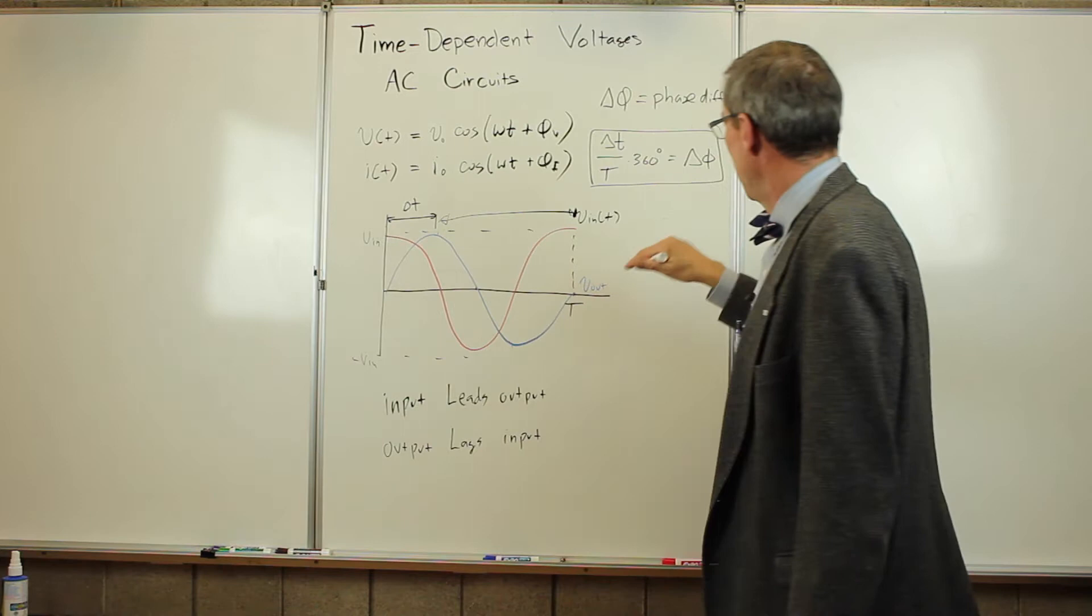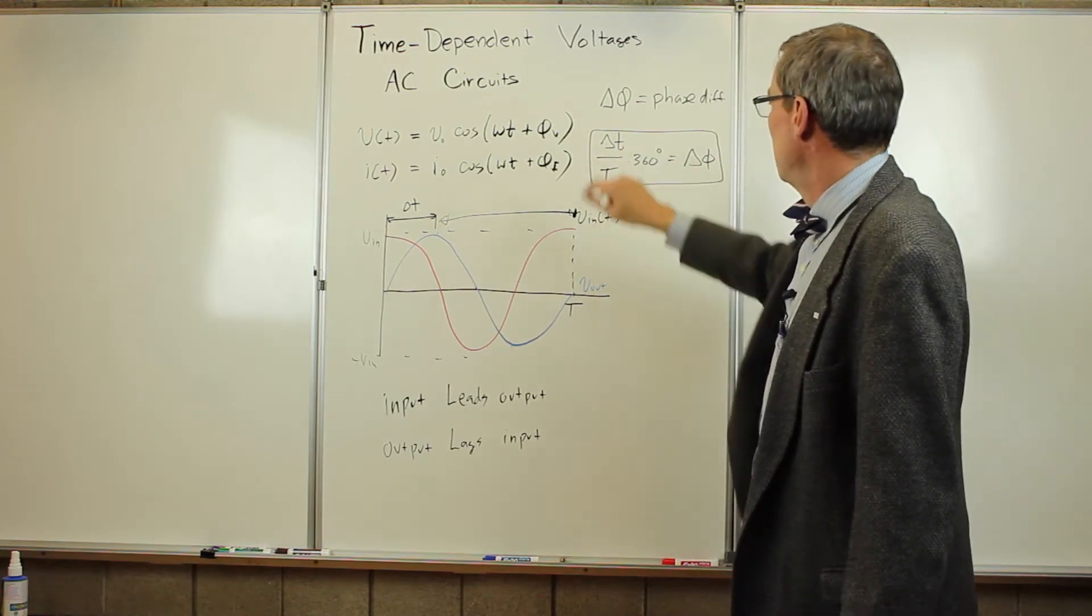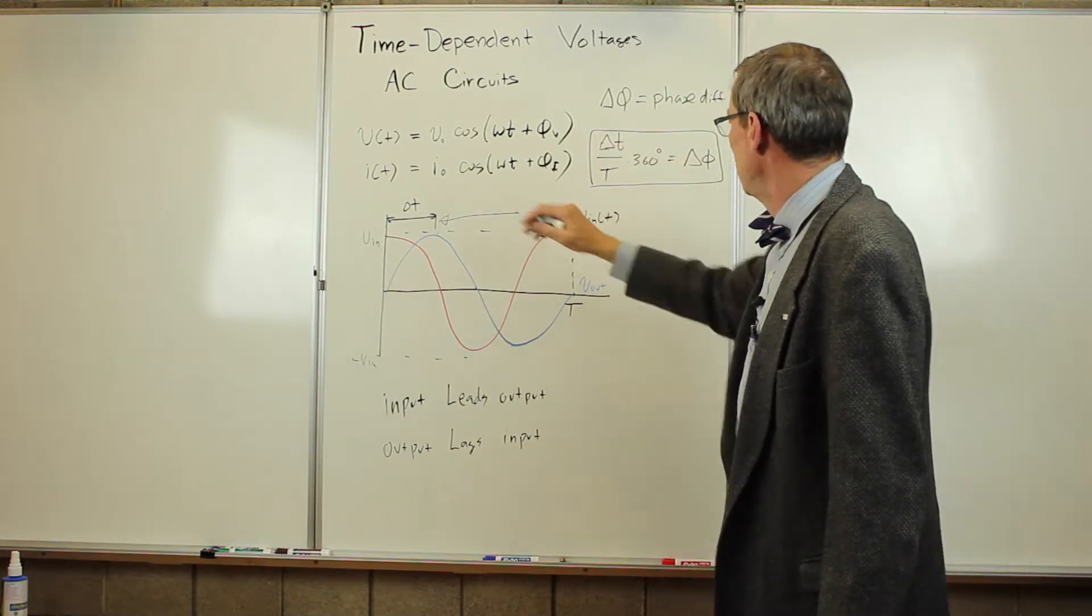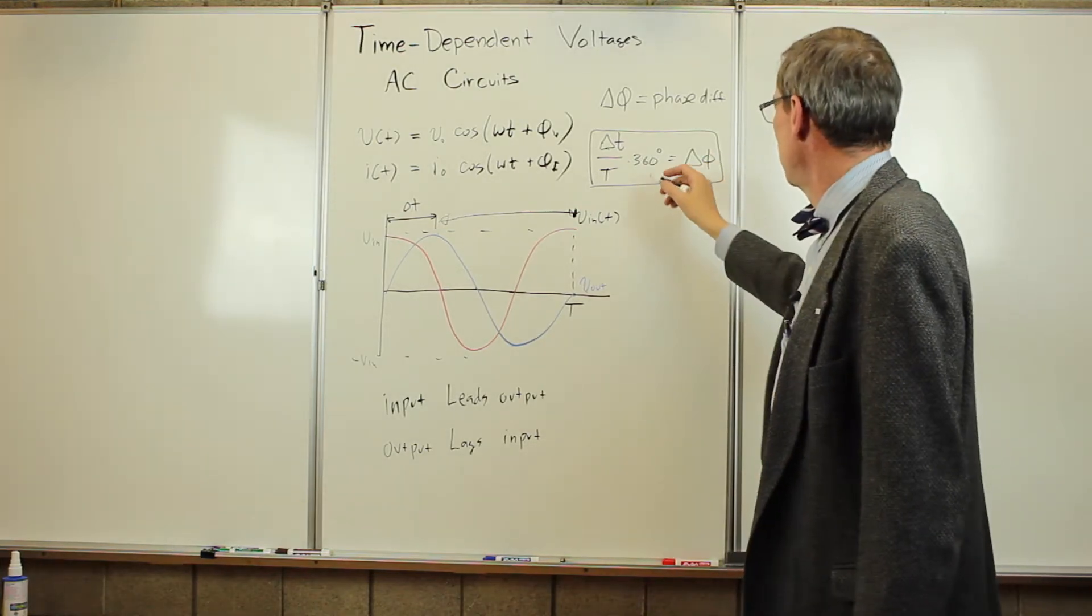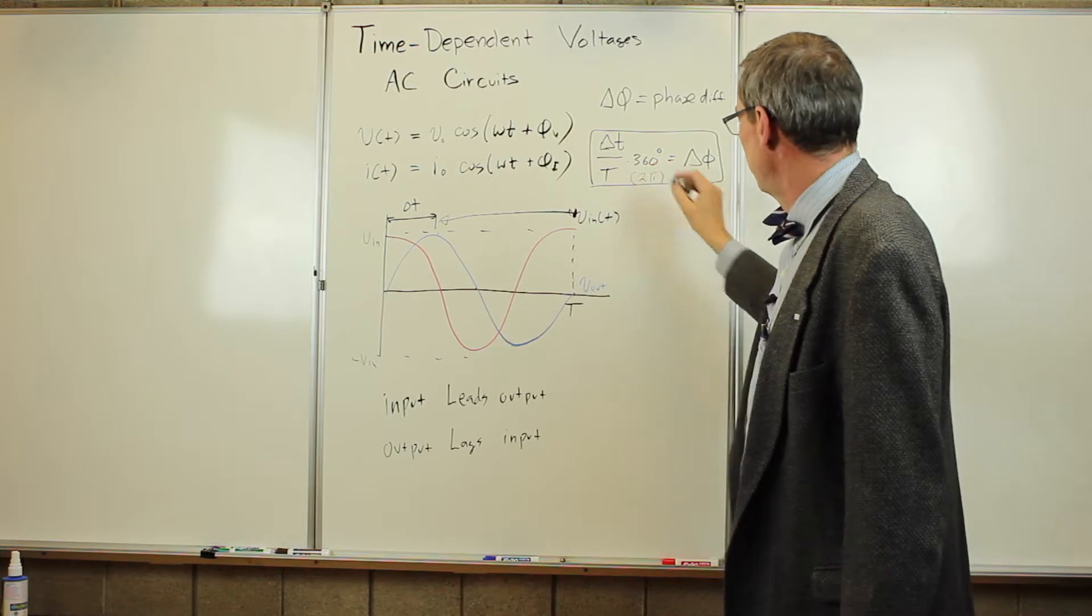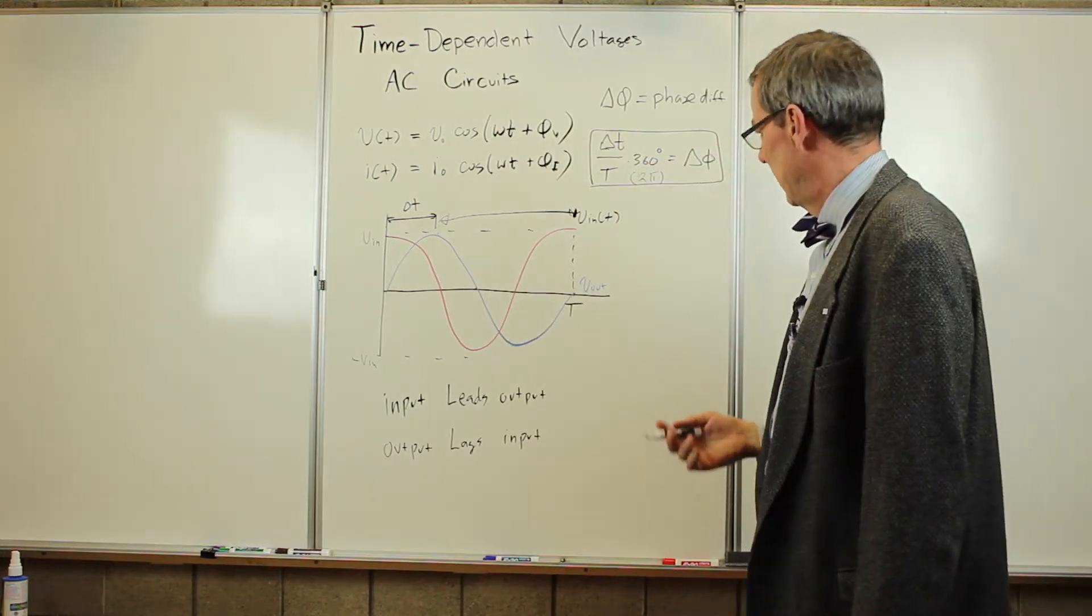So if we go into the lab and we can measure the period and we can measure that time difference, then we can convert it into a phase difference in degrees. Or if you want to do it in radians, we put 2 pi there instead of 360.